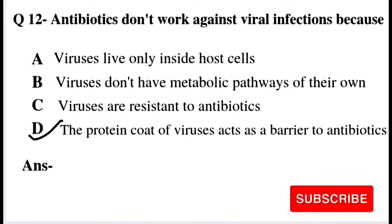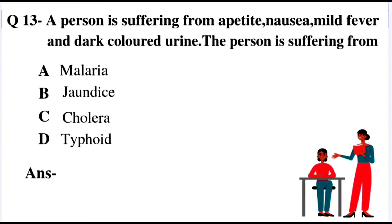Question number 13: A person is suffering from loss of appetite, nausea, mild fever, and dark-colored urine. Which disease is the person suffering from? Option A: Malaria, Option B: Jaundice, Option C: Option C, Option D: Typhoid. These symptoms — especially dark-colored urine — indicate Jaundice. So Option B is the right answer.